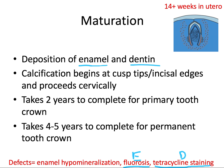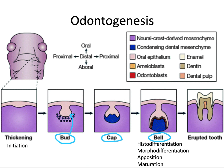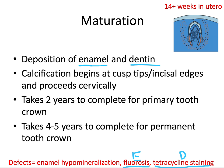Something very important to consider is that the later the disturbance occurs along this development process, the more minor the defect is. In the thickening and bud stages, if something went wrong, you might not have a tooth at all, or you might end up with an extra tooth. But if it happens a little bit later, you might get lucky and just have a little white spot. So when it occurs determines how major the ultimate effect will be.